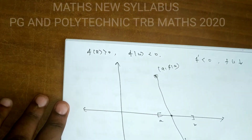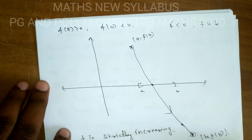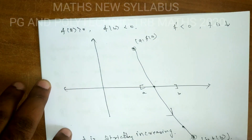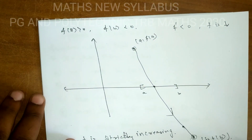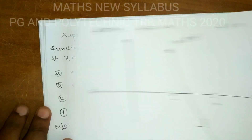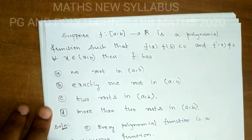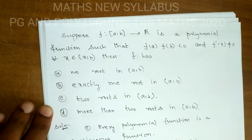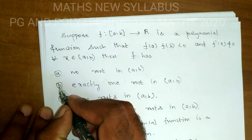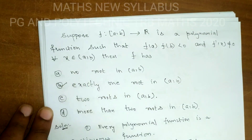Whether f is strictly increasing or strictly decreasing, the answer is the same. The function has exactly one root in the open interval (a, b). Option C is correct.